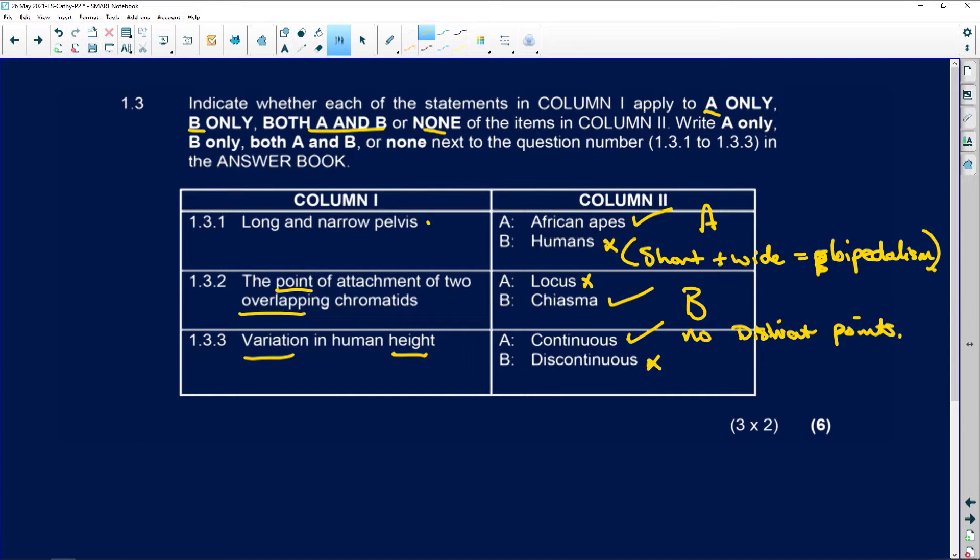Okay, whereas with discontinuous, there are distinct traits, points. So, for example, continuous would be height. It would be weight. Think of all the different sizes of people that we have in this world.